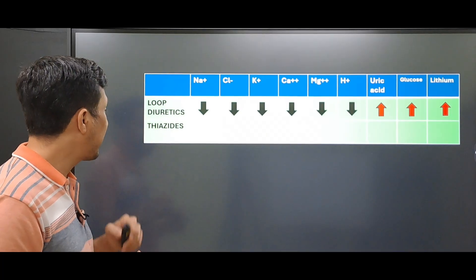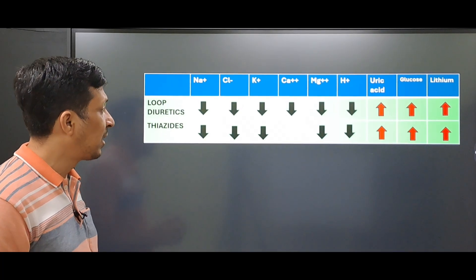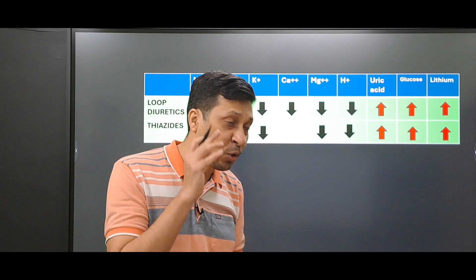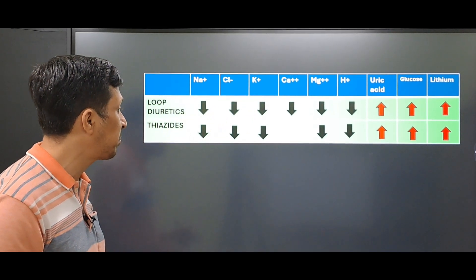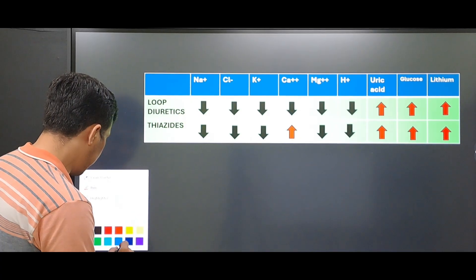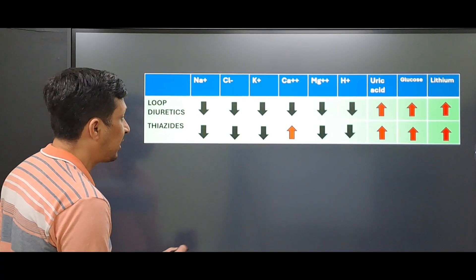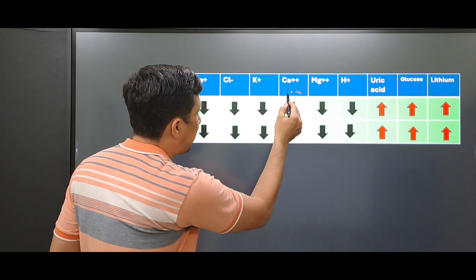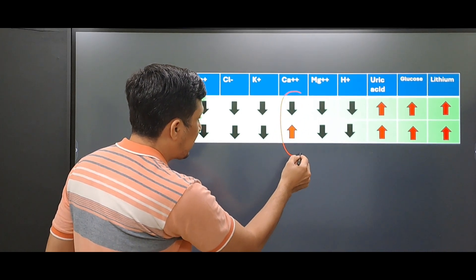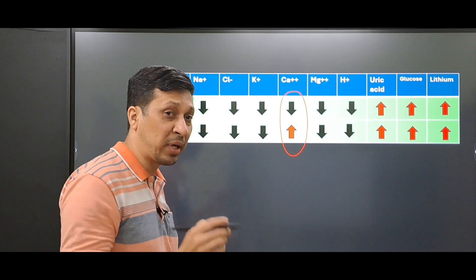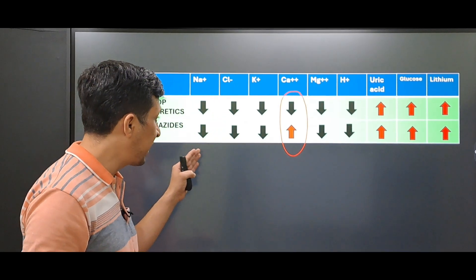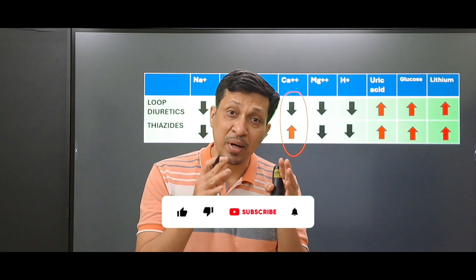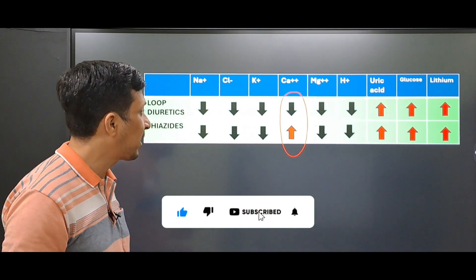When thiazides are given, the levels are almost the same as loop diuretics, with one exception: calcium. With loop diuretics, calcium in the blood is decreased — that is, there is hypocalcemia — whereas with thiazides, the level of calcium is increased, meaning there is hypercalcemia. This is the important distinguishing concept.